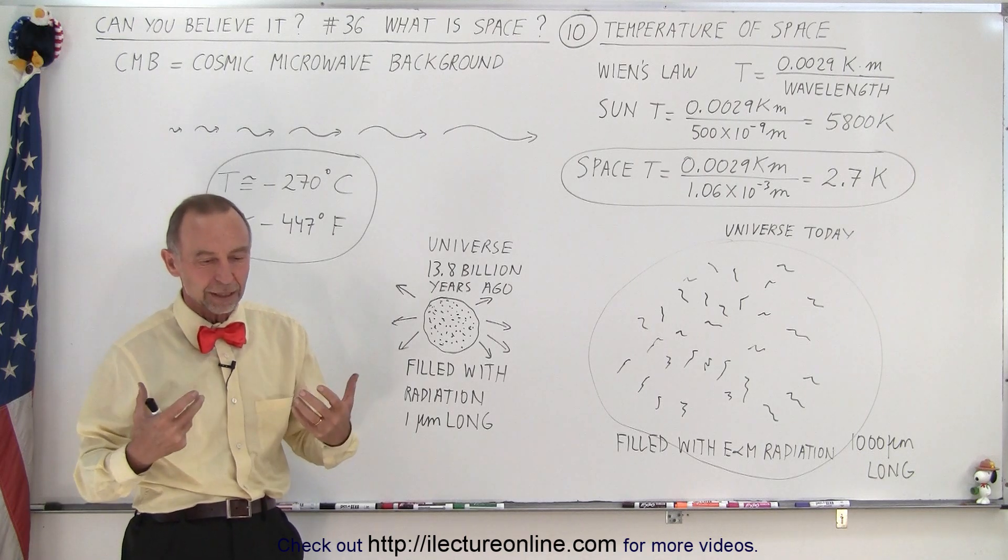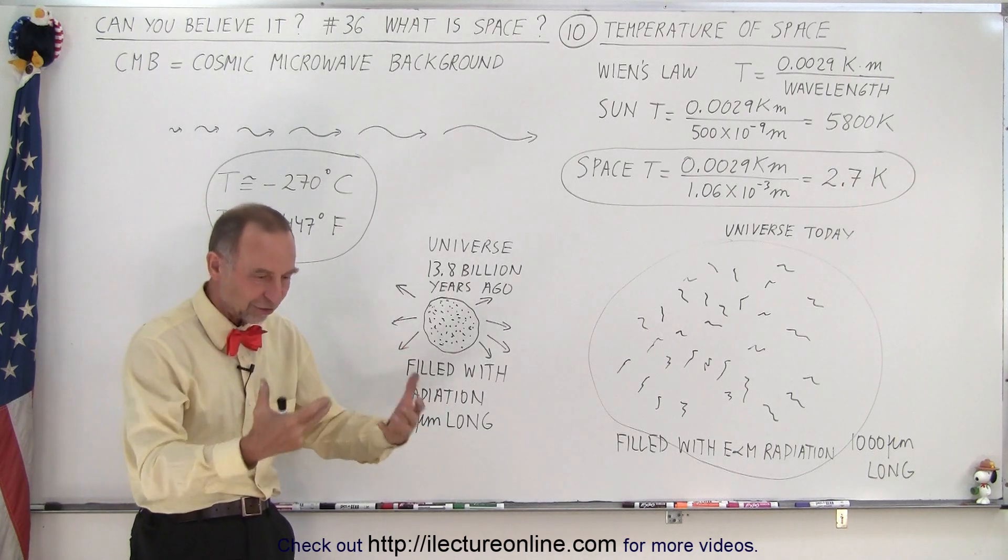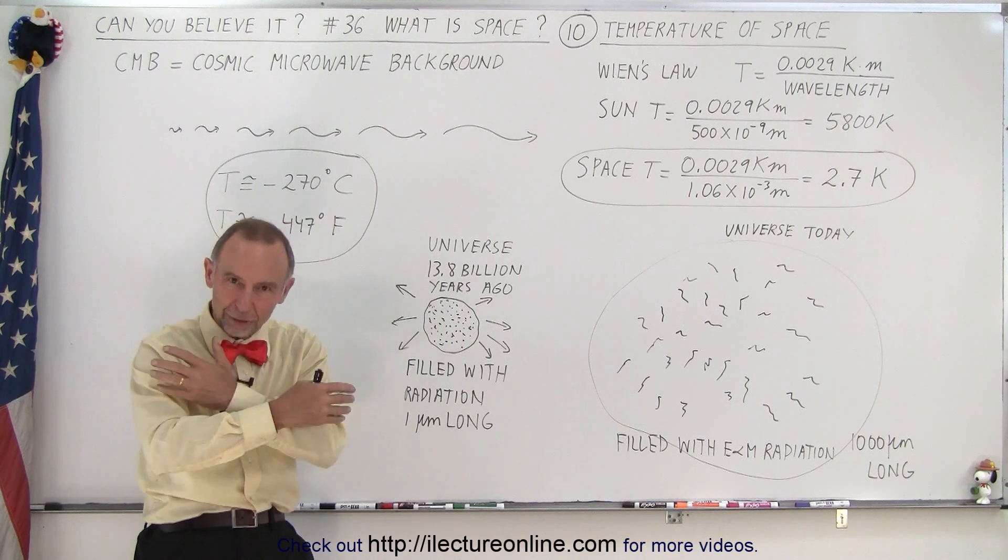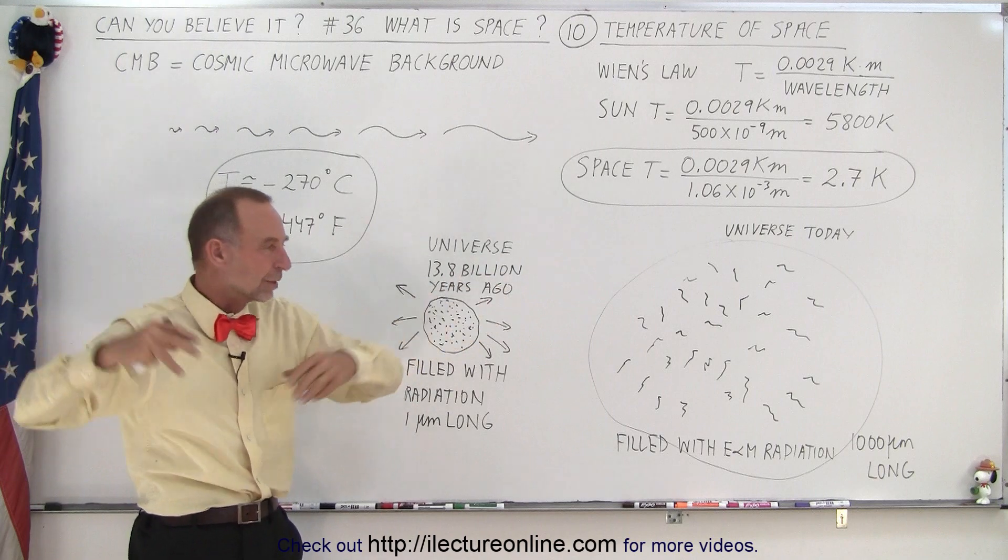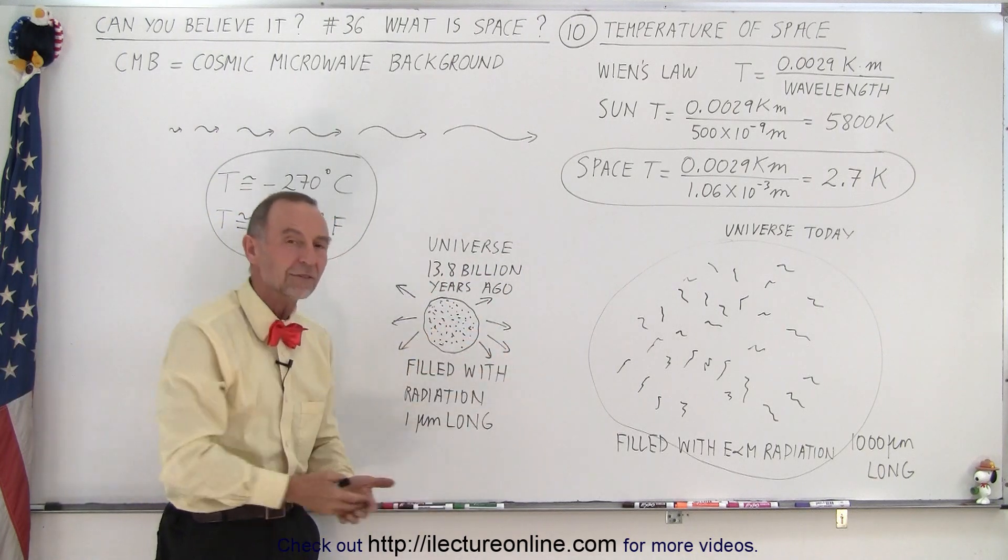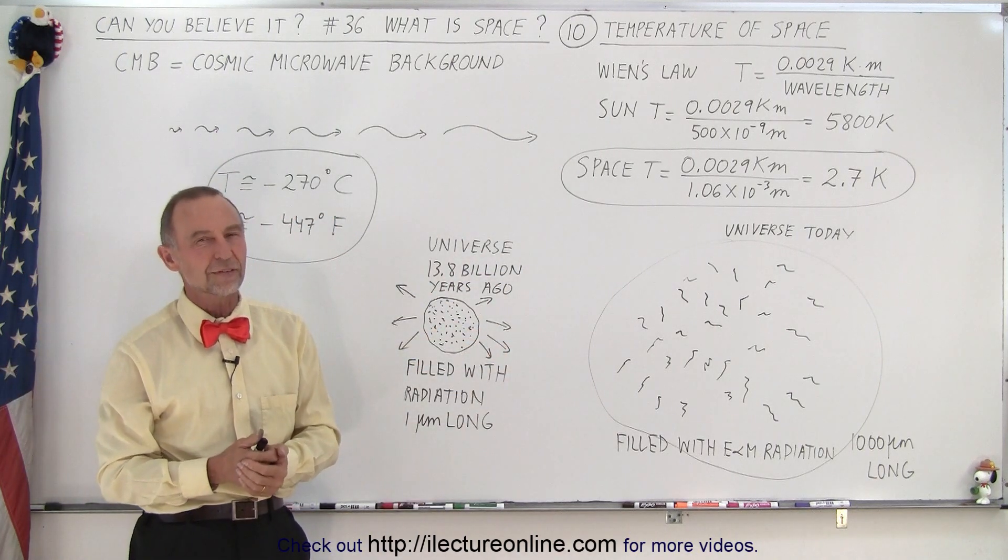So again, space is something that the radiation that's existed since the beginning universe, that permeates through it, space has been expanding, the radiation has been expanding with it, and now the temperature of space has dropped down to 2.7 Kelvin.